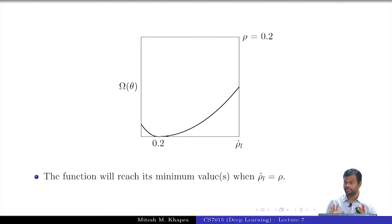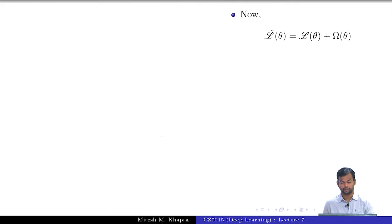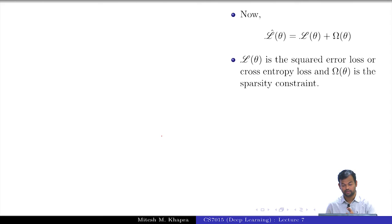You could think of other ways of doing that, I am sure you can, but this is also a reasonable way of doing this. So now our loss function is, as I said, going to be a combination of two values. L theta is a normal squared error loss that you have been dealing with and omega theta is this sparsity constraint that you have added.